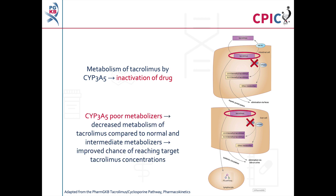In CYP3A5 poor metabolizers, the metabolism of tacrolimus is decreased. This causes CYP3A5 poor metabolizers to have a better chance of reaching target tacrolimus concentrations with standard dosing, compared to CYP3A5 normal or intermediate metabolizers.